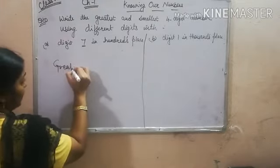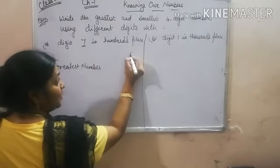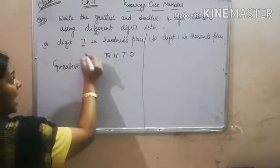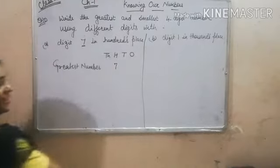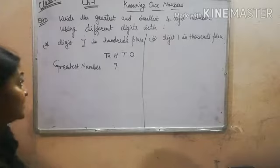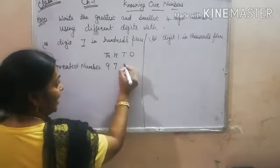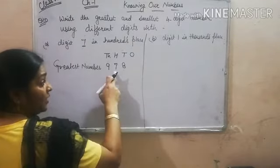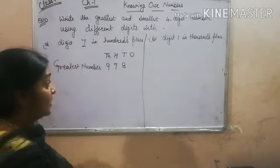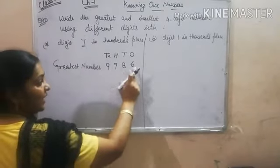For the greatest 4-digit number, the places are 1, 10, 100, and 1000. You have to fix 7 at the 100s place. Now you are free to use all the greatest digits. The greatest digit is 9, after that 8, and after that 7. But 7 is already used, so we can't use it again. We will use the next digit, which is 6. So the greatest number becomes 9786.